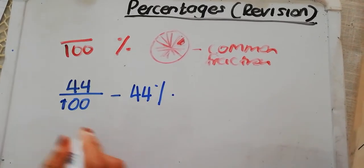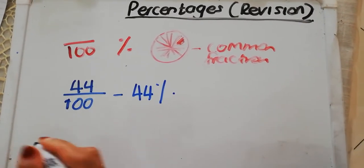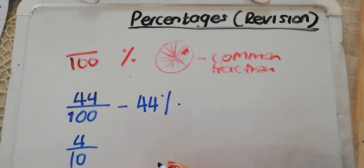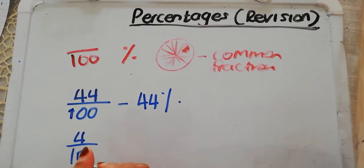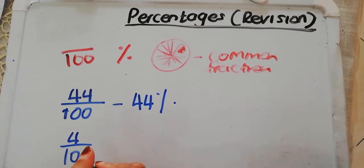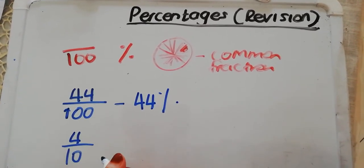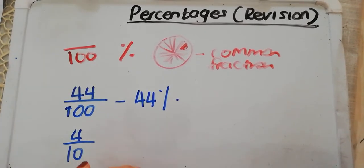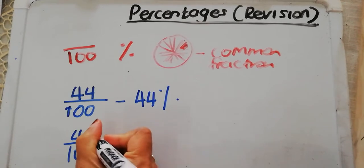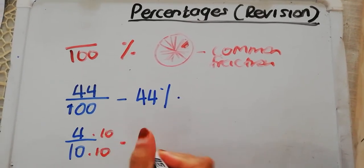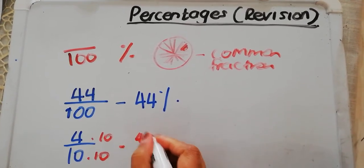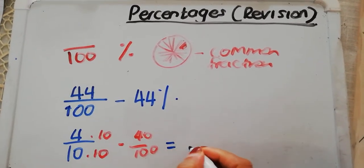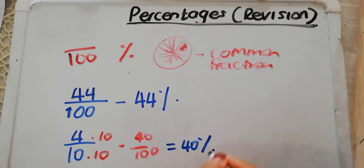Now, what happens if my denominator is not 100? Let's say it was 4 over 10, and they said convert it to percentage. We know that if I have a denominator of 10, I can multiply it by 10 to get 100. So I multiply my denominator, I multiply my numerator, and I get an answer of 40 over 100. Now that I've made it a common fraction, I will be able to write it as a percentage.